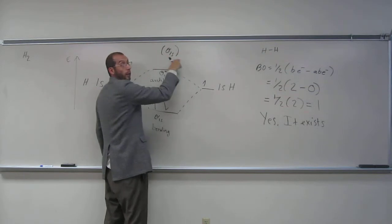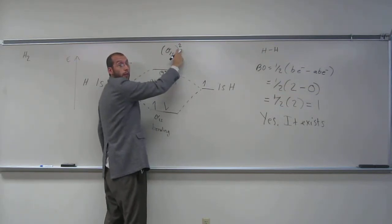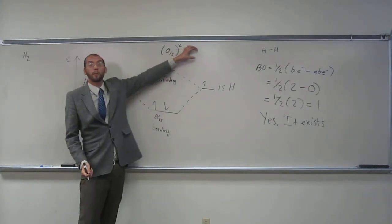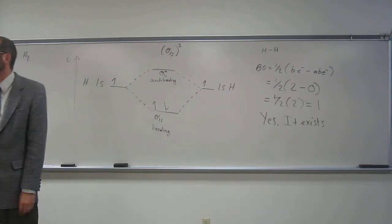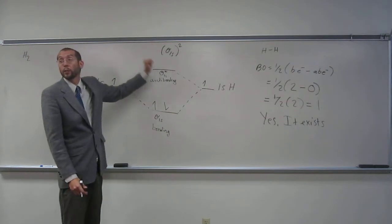So how do we write the electron configuration? Sigma 1s, so you've got to put it in parentheses, sigma 1s, and there's two electrons in it. If there was any electrons here, then we would put sigma star 1s and however many electrons were in there. Is everybody okay with that? That's the electron configuration for it.